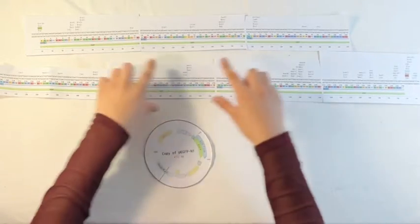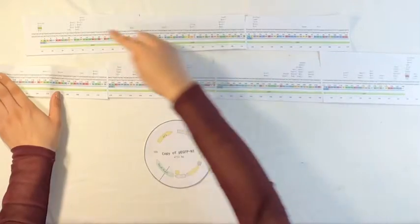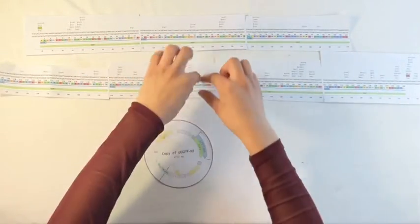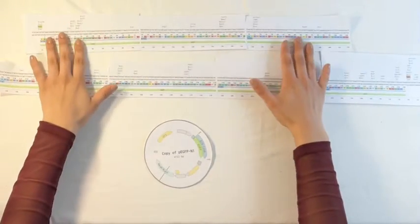Here I have the EGFP gene. It's actually this entire segment here, and it is in circular form, but I did split it up into two different strands.